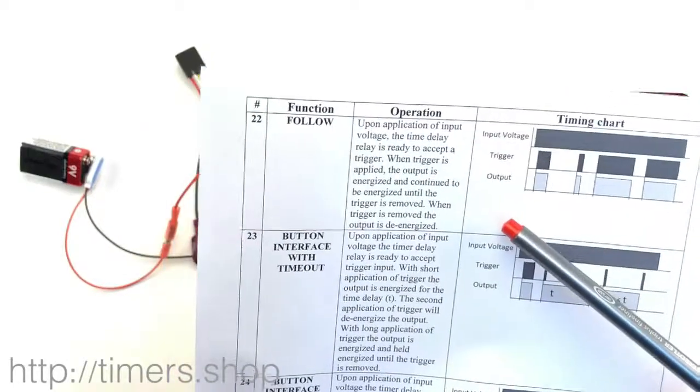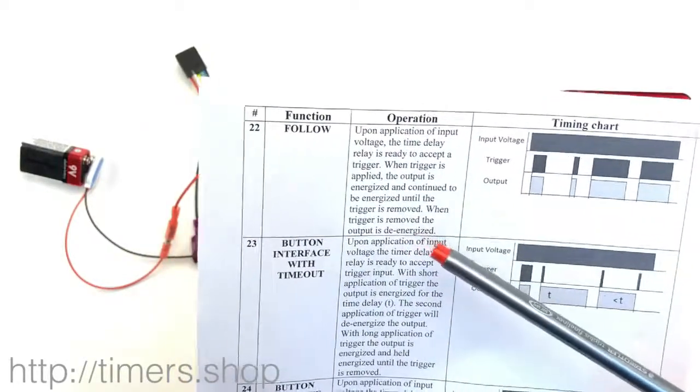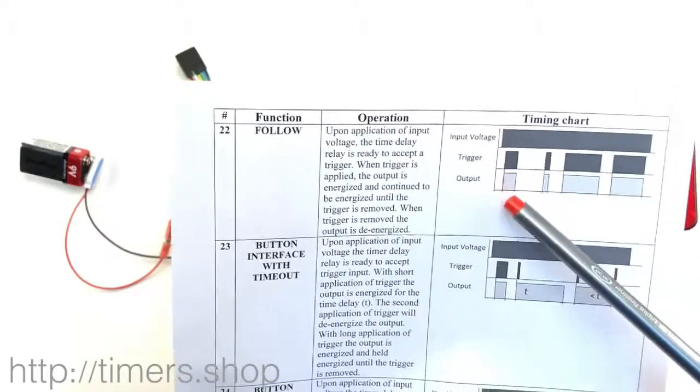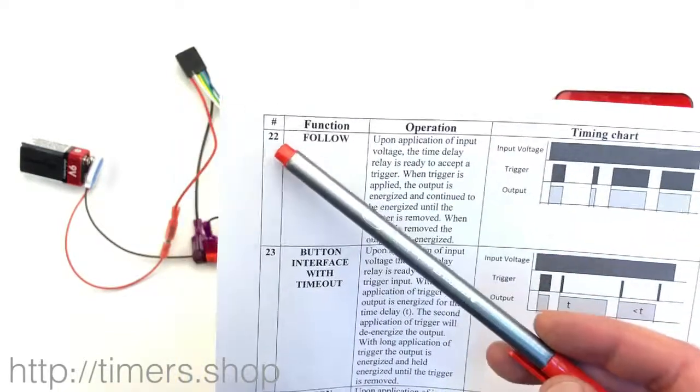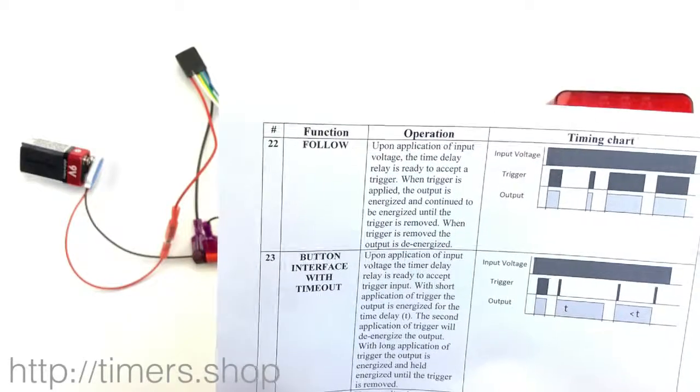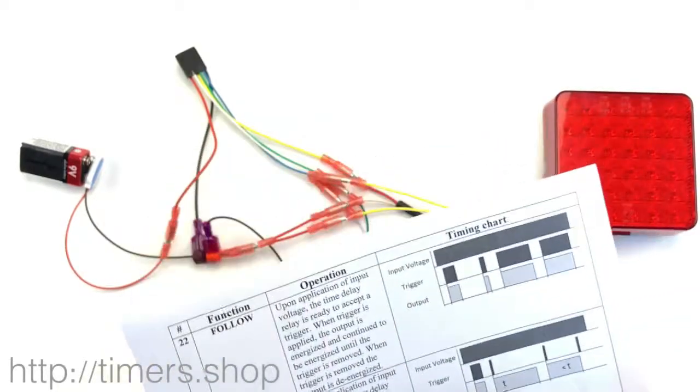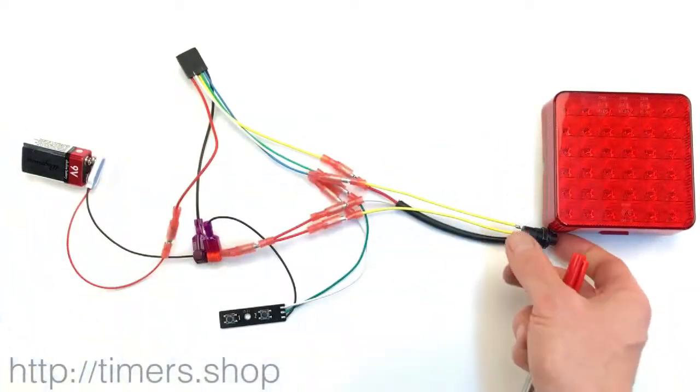You would connect your trigger to your source, and then the output will follow the trigger. You configure it to function 22, and it depends on the trigger. In this case, we have the button connected to ground.